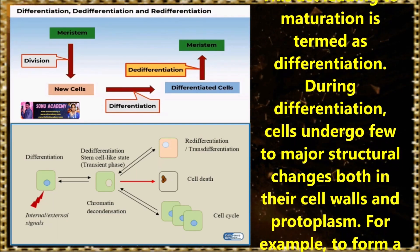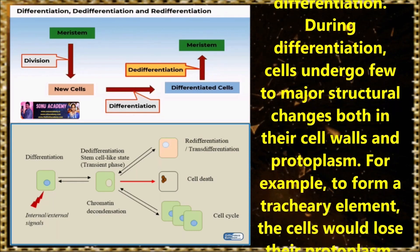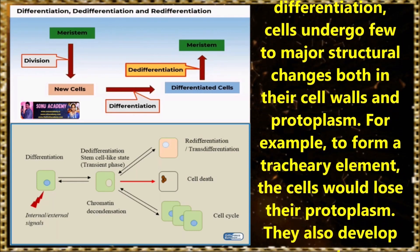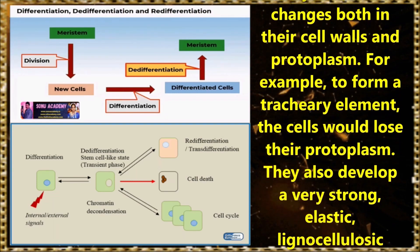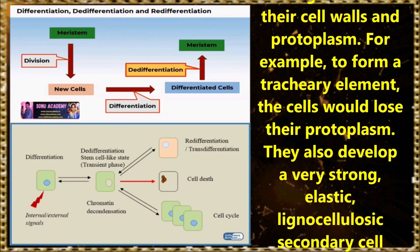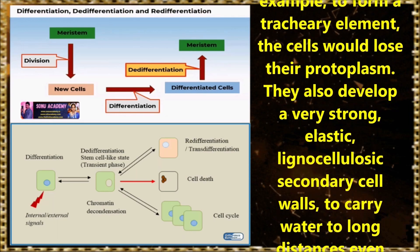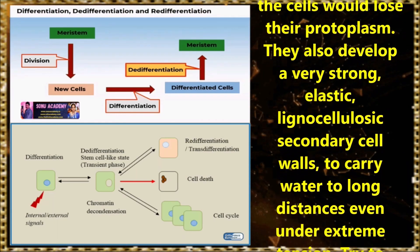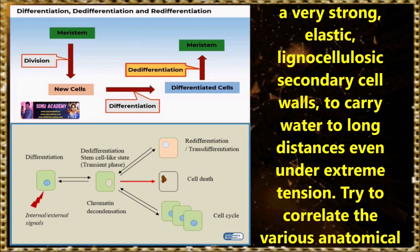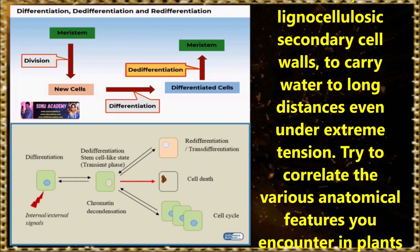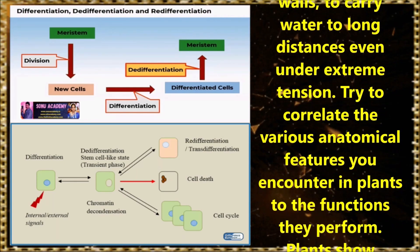During differentiation, cells undergo few to major structural changes both in their cell walls and protoplasm. For example, to form a tracheary element, the cells would lose their protoplasm. They also develop a very strong elastic lignocellulosic secondary cell wall to carry water to long distances even under extreme tensions.